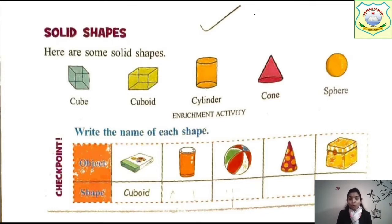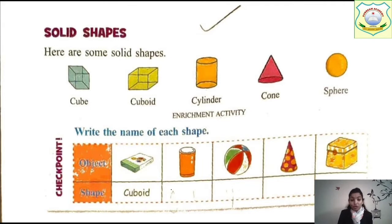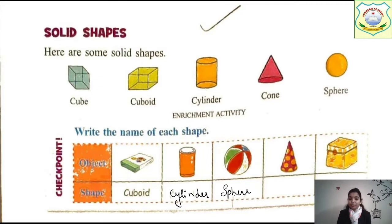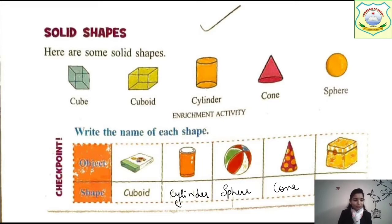Here, solid shapes are given. You know what a solid shape is — I have already taught you. So here are some solid shapes: cube, cuboid, cylinder, cone, and sphere. Write the name of each shape next to the objects. This can — a cool-drink can — what shape is it? Cylinder. We have studied this, so it is cylinder shape. Next is a ball — ball is sphere shape. Next, birthday caps — what shape is a birthday cap? That is cone. Now, it's a box — a square box — so what shape is that? Cube.